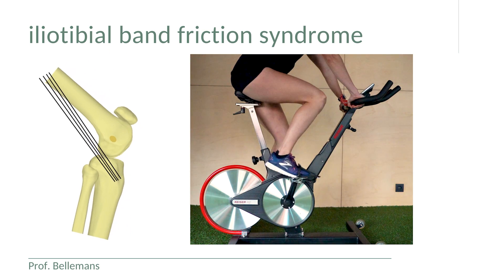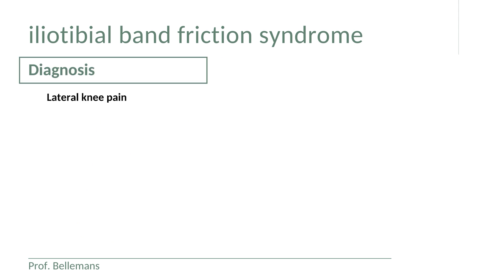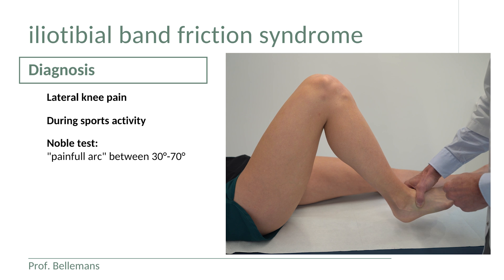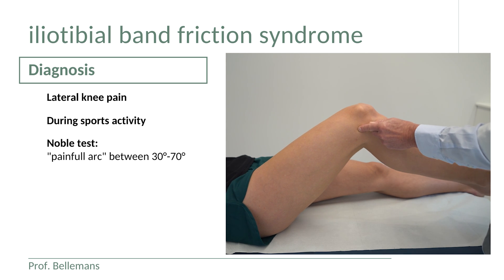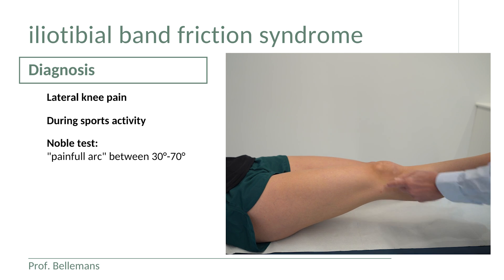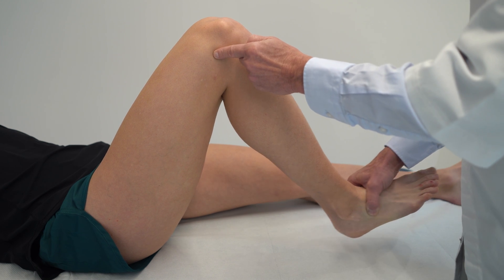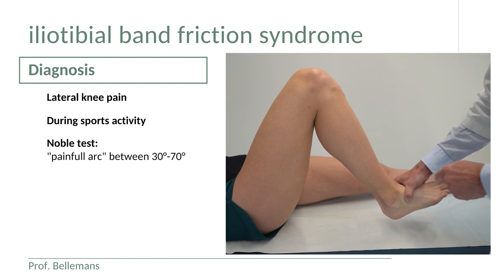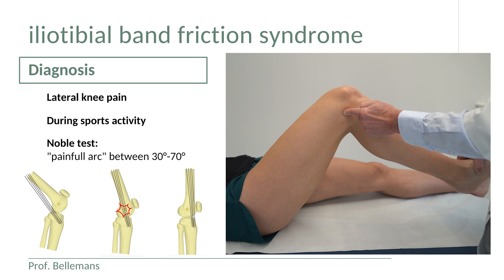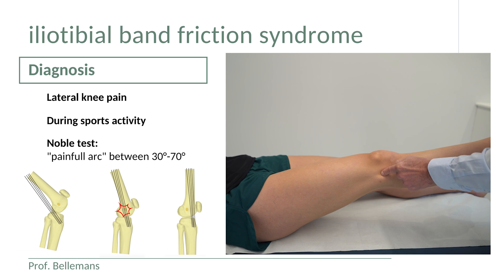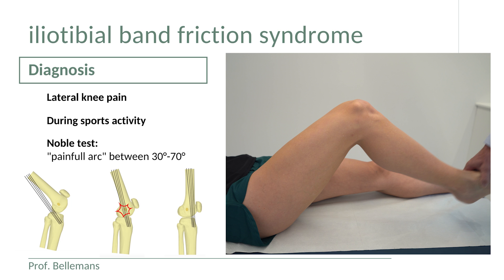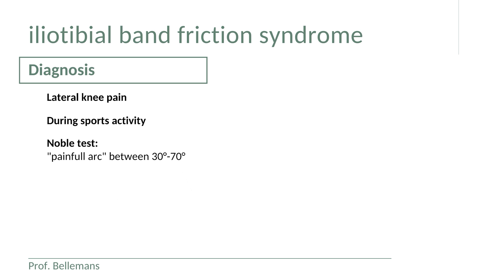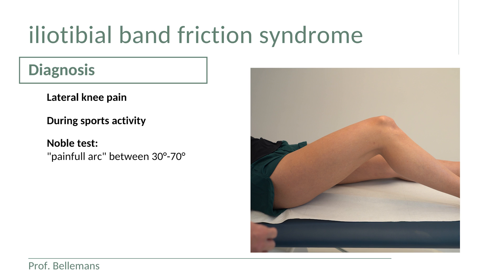To confirm the diagnosis of ITB friction syndrome there is a specific test called the Noble test. It is executed by placing the examiner's finger on the lateral epicondyle while extending the knee from deep flexion to full extension. In deep flexion there is no pain because the ITB is posterior to the finger, then pain is reproduced at a certain point, and disappears again as the knee reaches full extension. The patient reports a painful zone between 70 and 30 degrees of flexion — a painful arc — which is diagnostic for ITB friction syndrome.